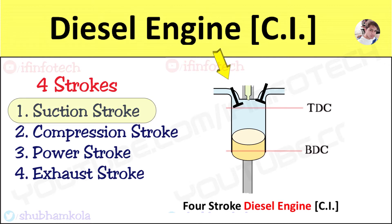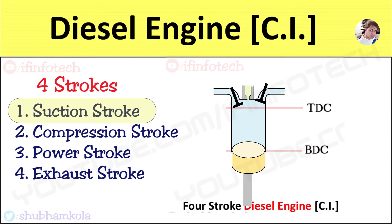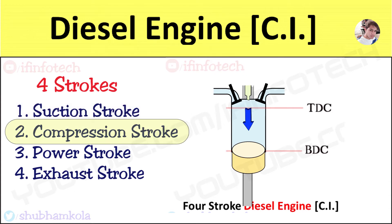The inlet valve opens 25 degrees before the TDC position of the piston. During the suction stroke, pressure inside the cylinder is at atmospheric pressure, but when the piston moves from TDC to BDC, volume increases, creating a pressure difference. Due to this pressure difference, fresh air enters the engine cylinder and fills it completely. The inlet valve closes at an angle of 30 degrees after BDC, and the compression stroke begins.